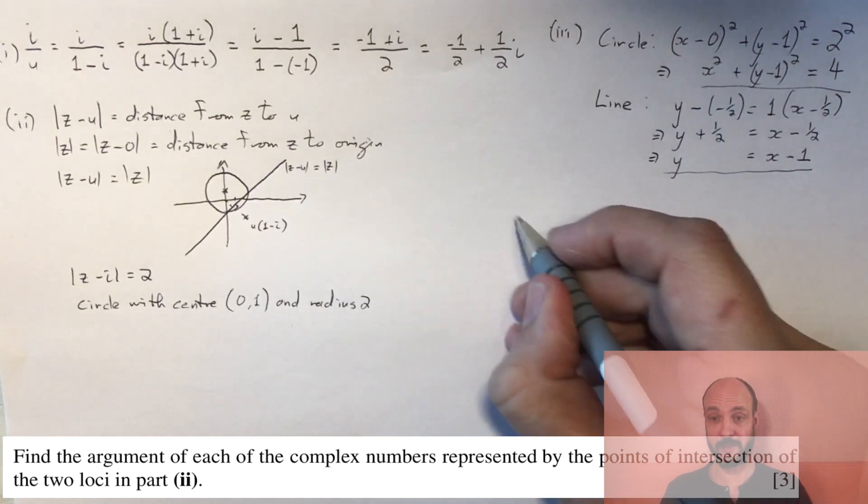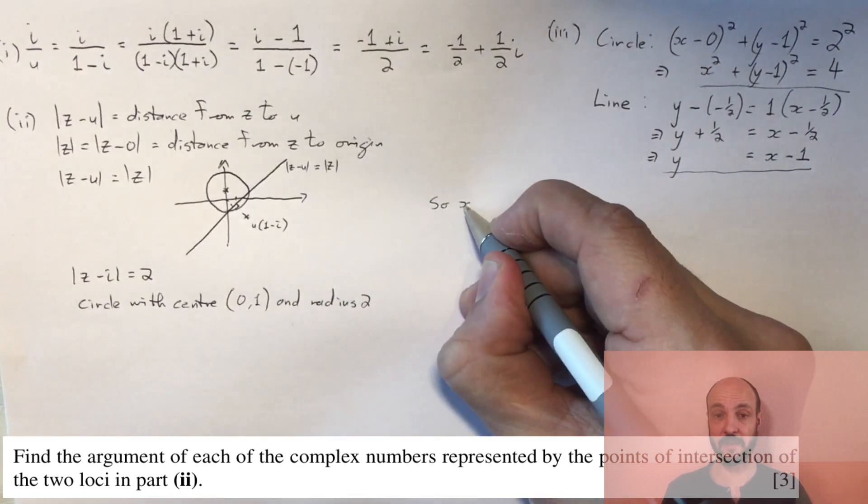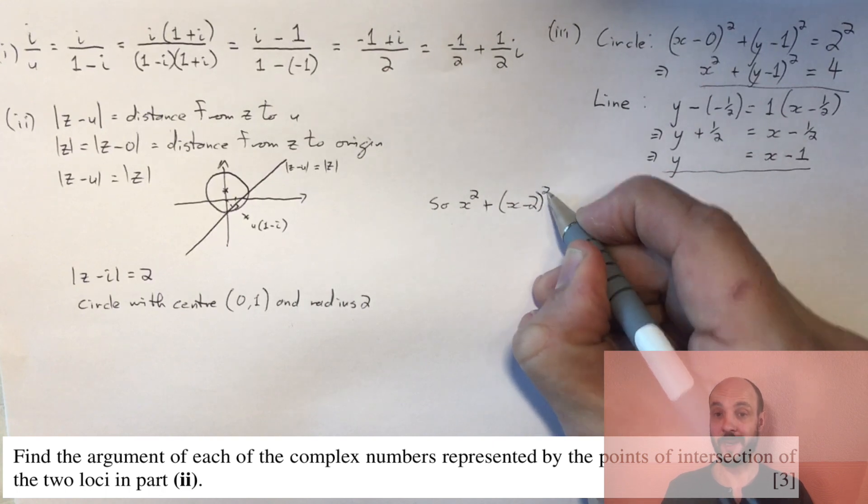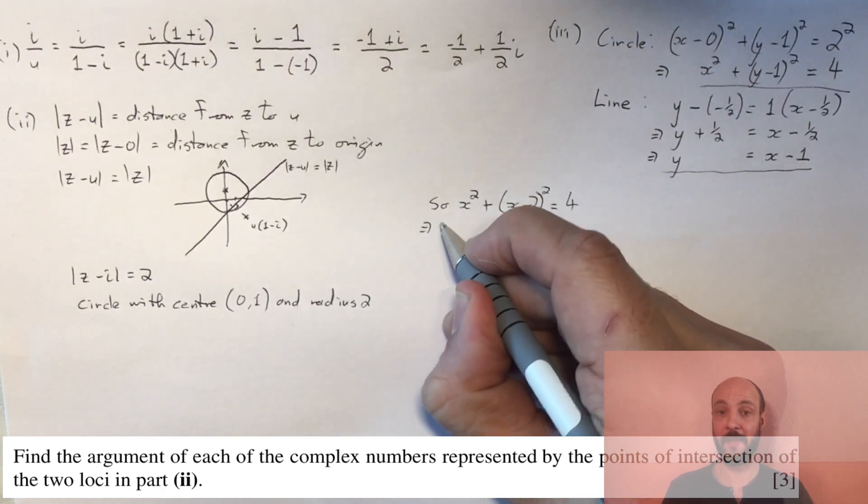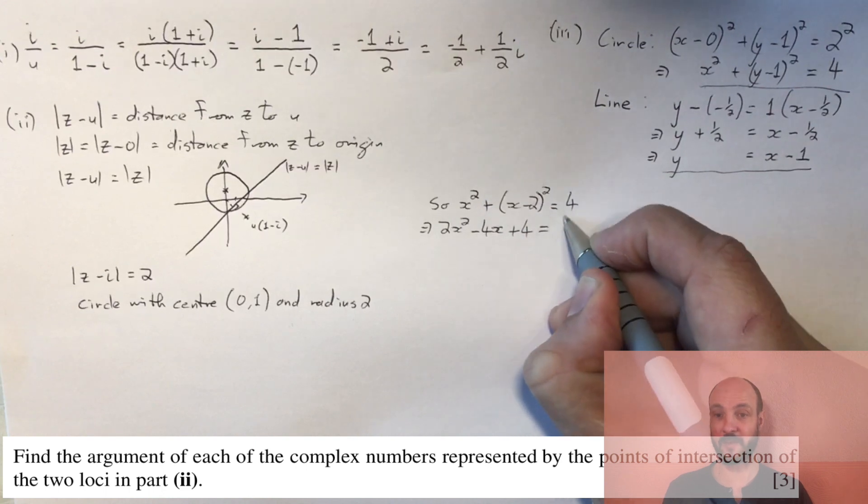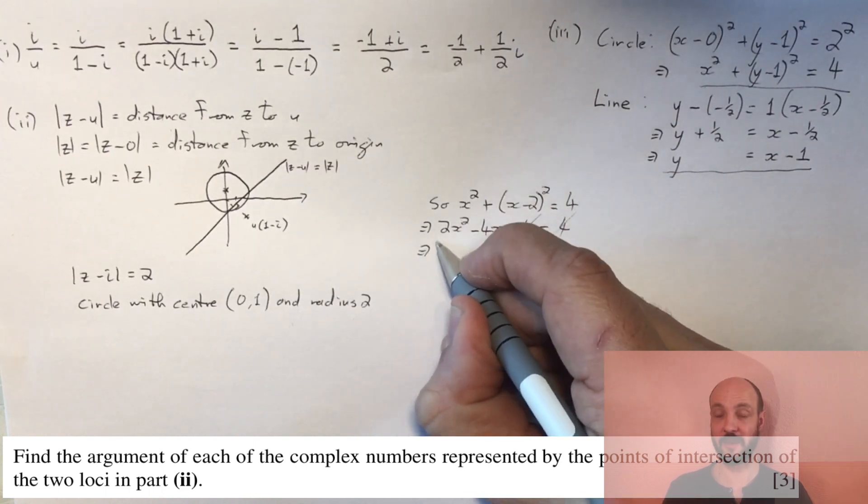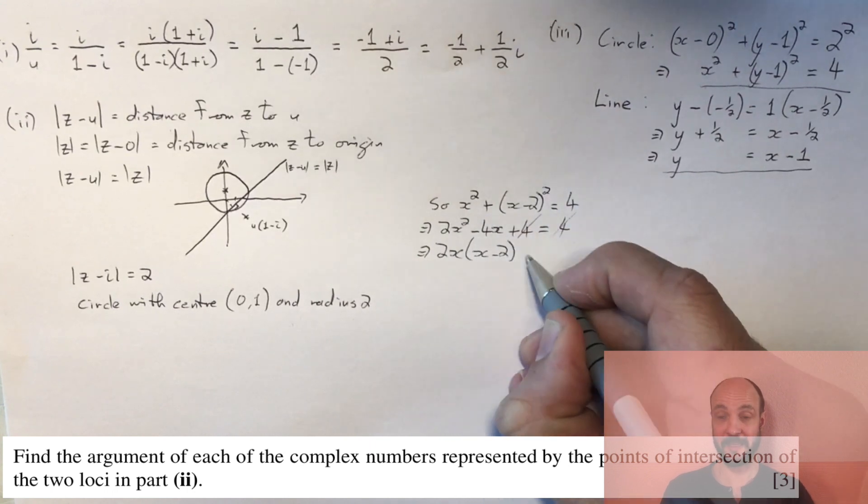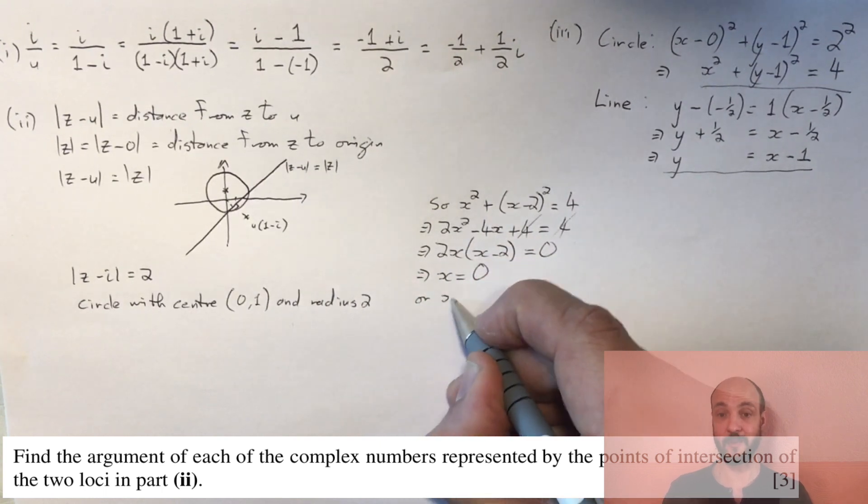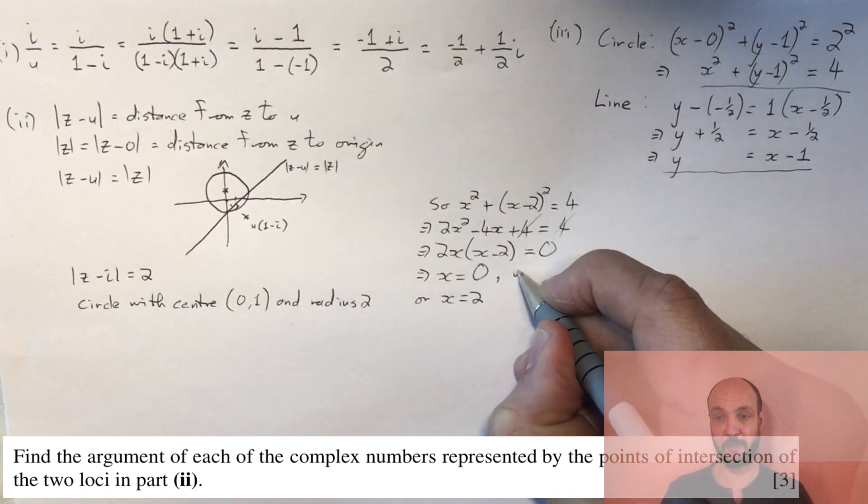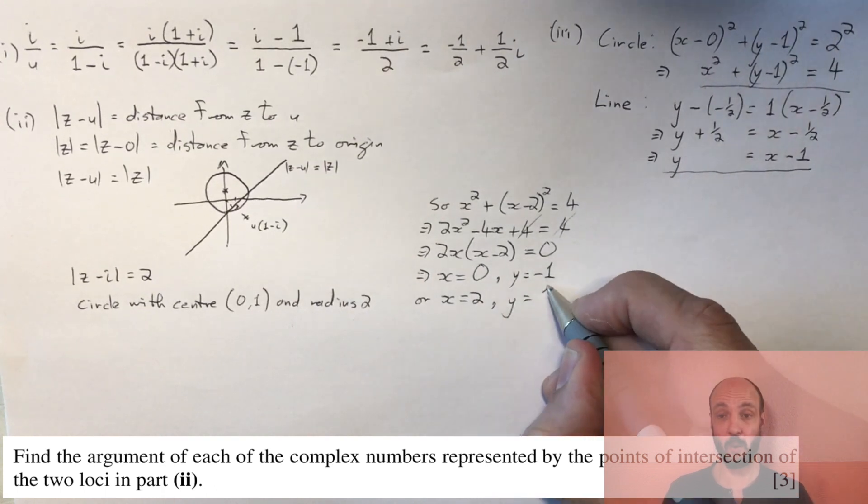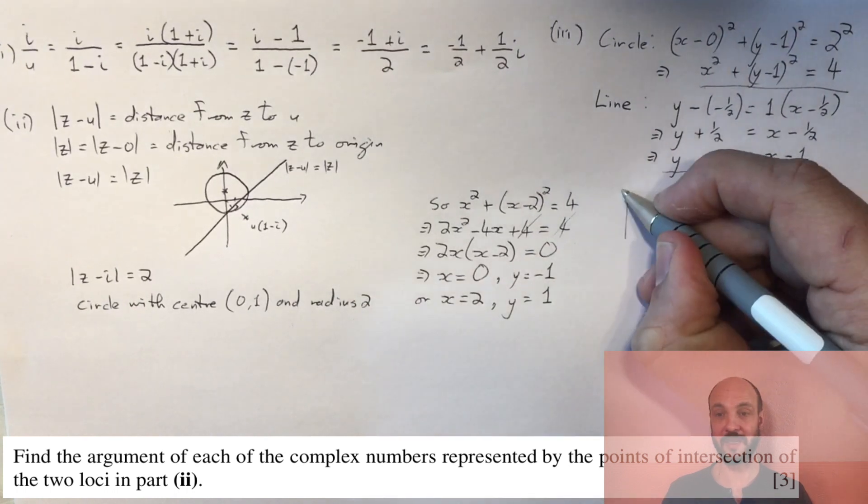Substituting y = x - 1 into the circle equation gives x² + (x - 2)² = 4. Expanding: x² + x² - 4x + 4 = 4. Collecting terms: 2x² - 4x = 0, which factorizes to 2x(x - 2) = 0. So x = 0 or x = 2. If x = 0, then y = -1. If x = 2, then y = 1.